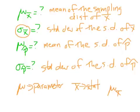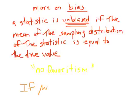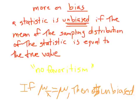Now we can talk about bias with more vocabulary. A statistic is unbiased if the mean of the sampling distribution of the statistic equals its true value — so if mu of x-bar equals mu, then x-bar is unbiased. It's a more formal way of talking about playing no favorites. Some samples will be far from the mean, but on average, the mean of all the samples will equal the mean of the population. That's how we talk about bias now.